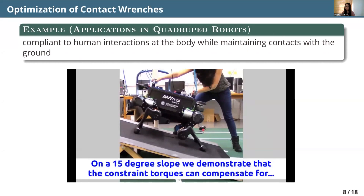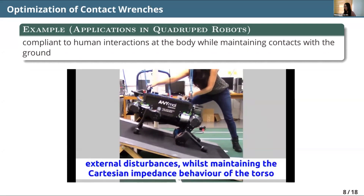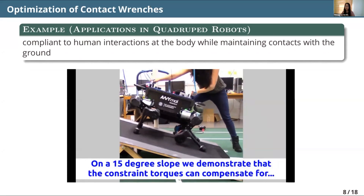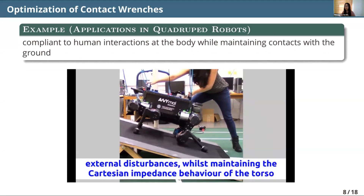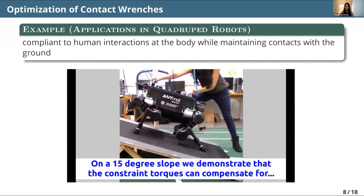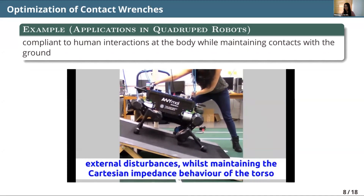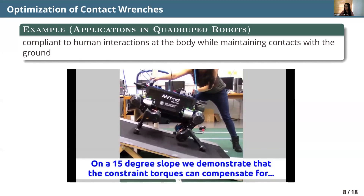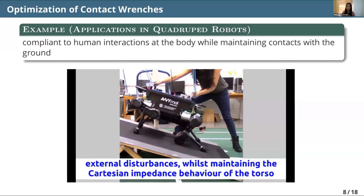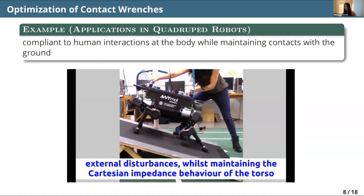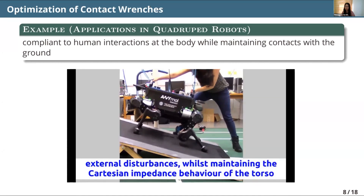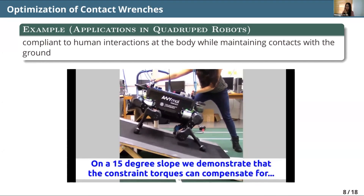This idea is quite generic, so we use it for quadruped robots as well. The original motivation is that if one day a robot walks on the street, it might bump into a human — something we can't really avoid. But we don't want to injure the person, and at the same time we don't want the robot to fall. So the robot needs to be compliant enough when bumping into something, while maintaining a certain amount of contact force with the floor so it doesn't slip away. We estimate the amount of external force on the body, and when we optimize the contact force, having this information makes it robust to disturbances from humans.